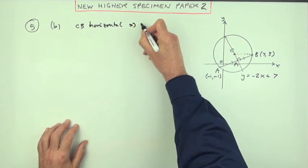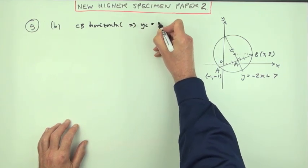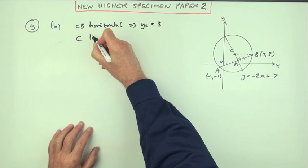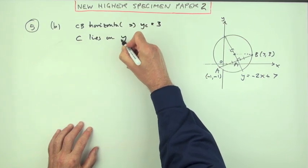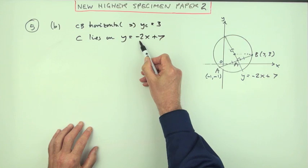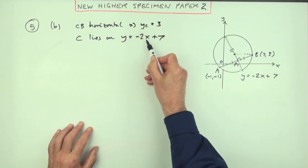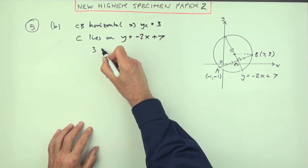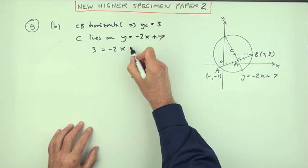CB horizontal means the y-coordinate of C is 3. The next thing is this statement: C lies on the line y = -2x + 7. So if you know it fits this equation and you know its y-coordinate, you can get its x-coordinate just by feeding it in. So you've got 3 = -2x + 7. Flip that over: 2x = 4, so x = 2.